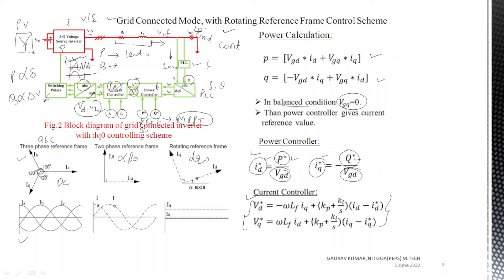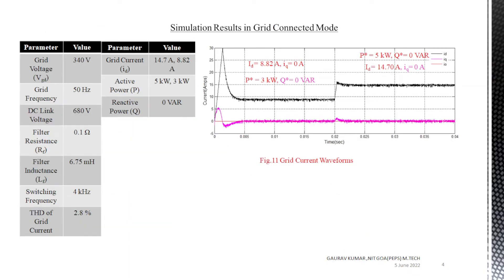The formula to calculate power when voltage and currents are in dq0 reference frame is: instantaneous active power P = Vzd·Id + Vzq·Iq, and reactive power Q = −Vzd·Iq + Vzq·Id. For a balanced condition Vzq = 0. From P* and Q* the reference currents Id* and Iq* are generated for the current controller. The simulation result of the grid connected system shows the current flowing from the inverter to the utility grid.